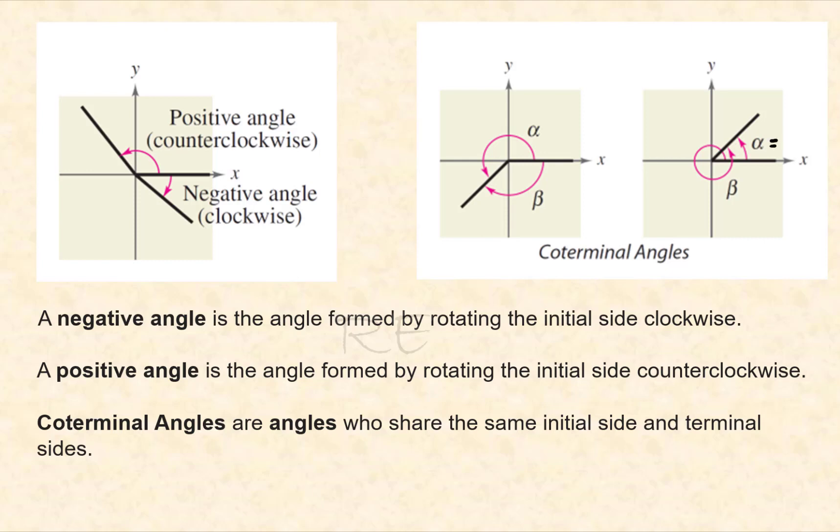If angle alpha is equal to 35 degrees, we're going to generate a coterminal angle by adding a full rotation to angle alpha, a full rotation of 360 degrees. We call that angle beta, and 360 plus 35 is 395. So alpha and beta are coterminal angles.